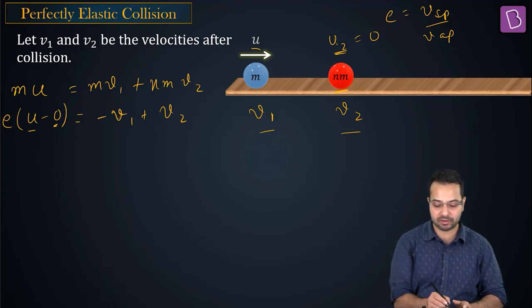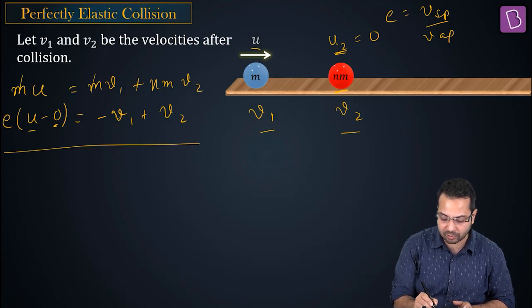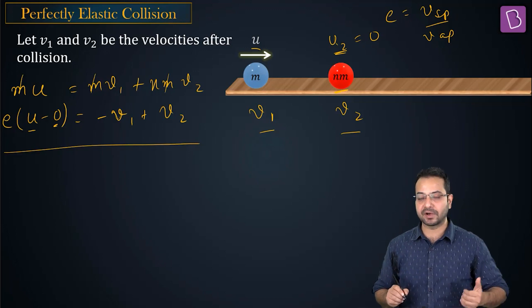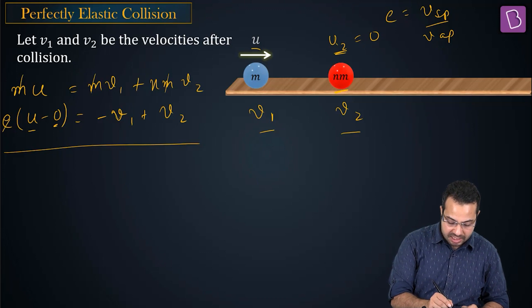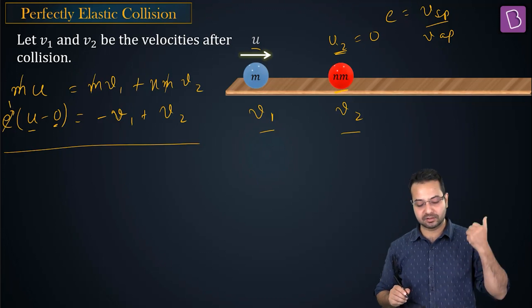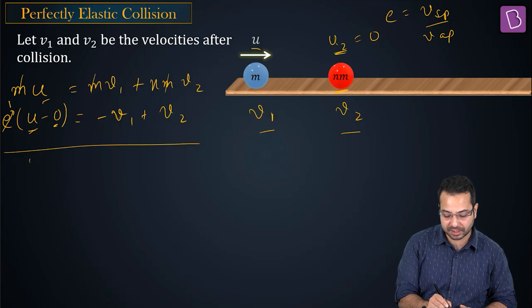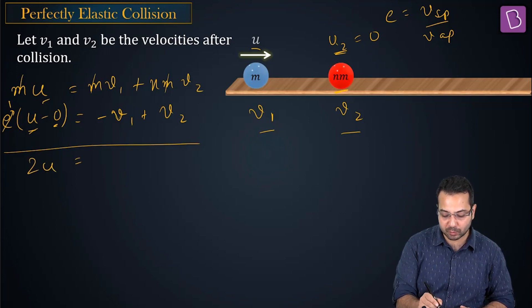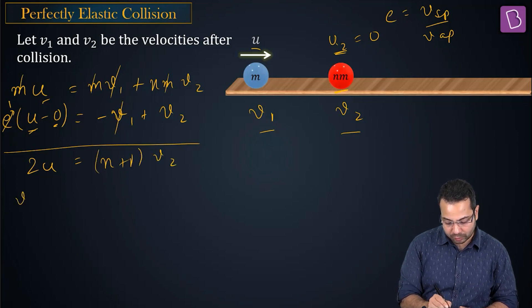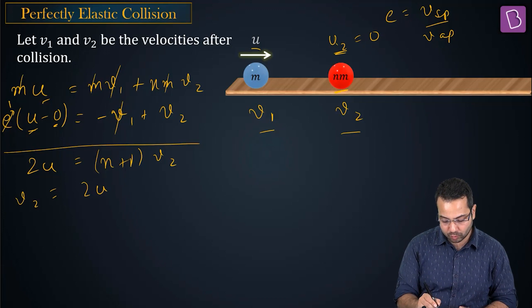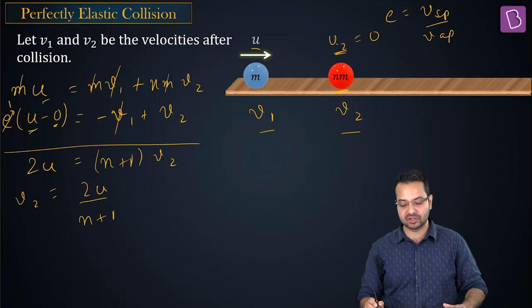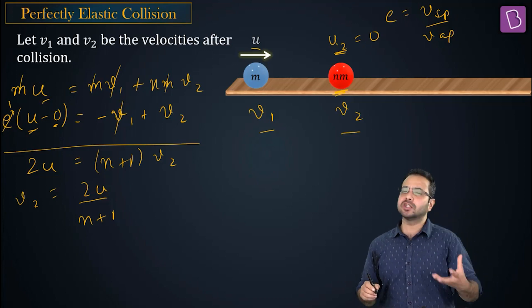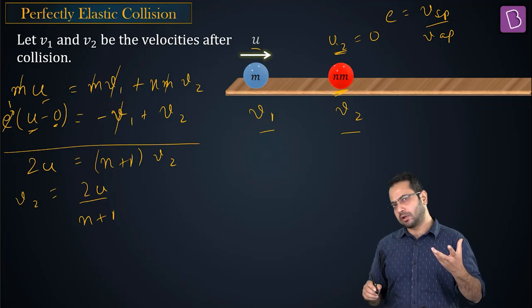Cancelling m from both sides of the momentum equation and adding both equations: with e = 1 for elastic collision, u plus u gives 2u equals (n+1)·v2, so v2 equals 2u divided by (n+1). That is the final velocity of ball nm.